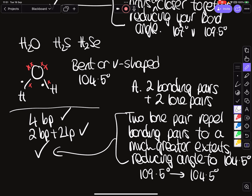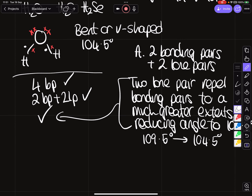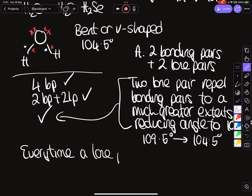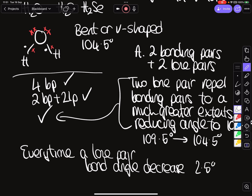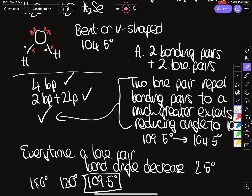The key rule is: every time you add a lone pair, the bond angle decreases by 2.5 degrees. So linear is straightforward; trigonal planar gives 120 degrees (360 ÷ 3); tetrahedral is 109.5; subtract 2.5 for pyramidal to get 107; subtract another 2.5 for bent/V-shaped to get 104.5 degrees.